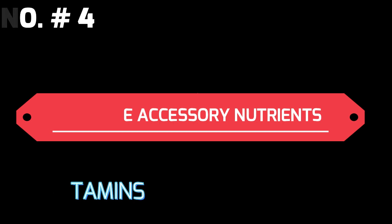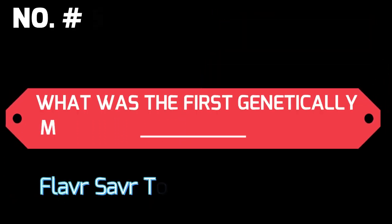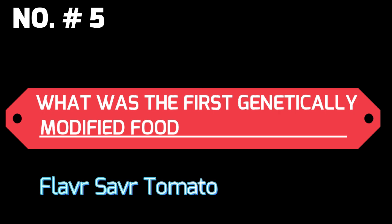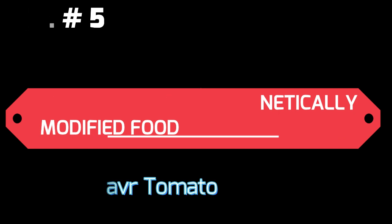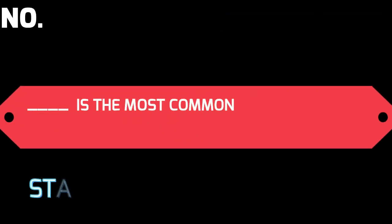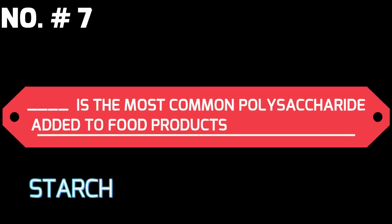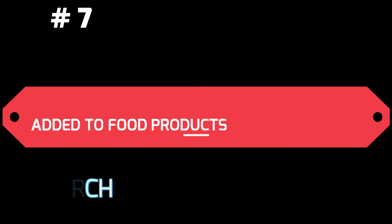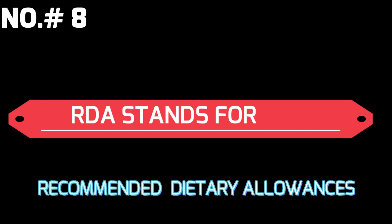Name the accessory nutrient. Answer: vitamins. What was the first genetically modified food? Answer: Flavr Savr tomato. Sucrose is commonly referred to as sugar. The most common polysaccharide added to food is starch.